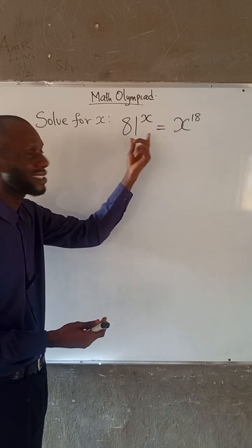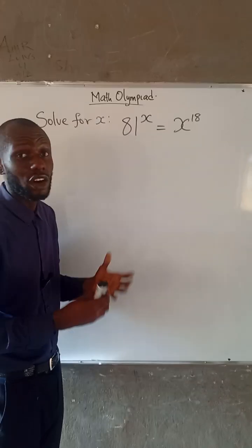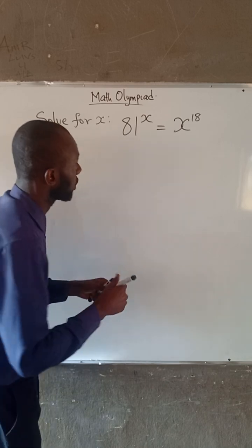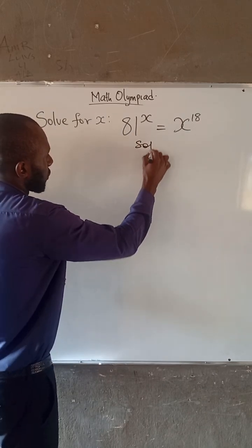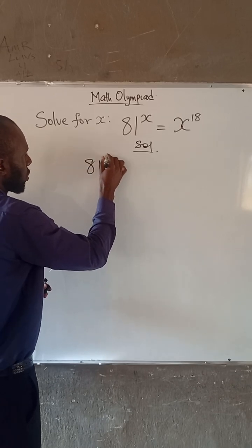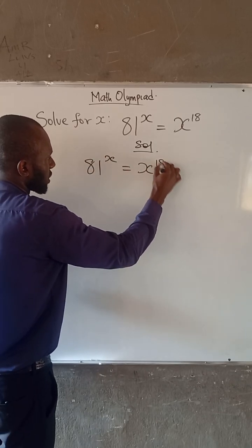How can we obtain the value of x here? We can, and that would be by some manipulations. So let's obtain the value of x. We have that 81^x = x^18.